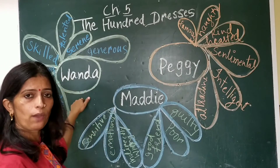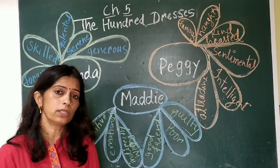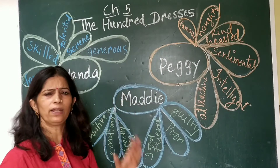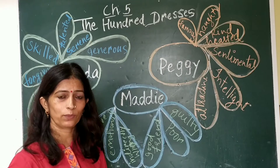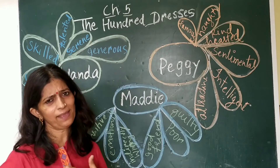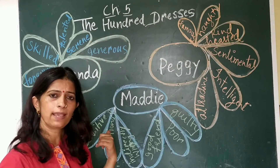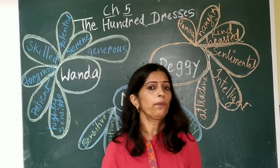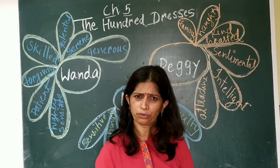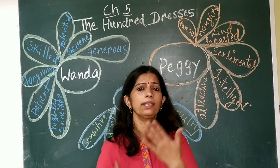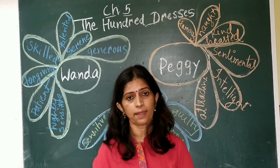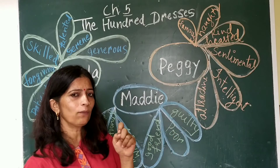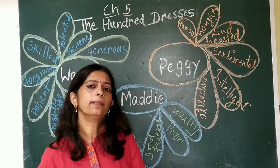How was she sensitive? When Wanda was being hurt and teased by others, Maddie felt very bad. She said to herself, 'I am also as poor as she is. If any other child makes fun of me, will I feel good? No.' So she kept on thinking these sorts of things in her mind. She tried, but the only thing was that she did not try to stop others from bullying Wanda.